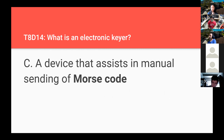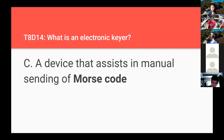What is an electronic keyer? It is a device that assists in manual sending of Morse code — an electronic keyer assists in manual sending of Morse code.